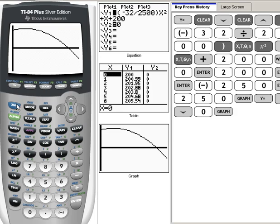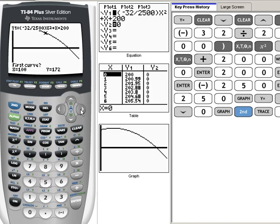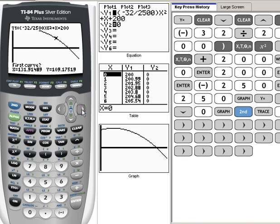And now we can use an intersect feature, second trace, number 5 is intersect, and we can move our cursor to where we are right on top of that point of intersection.